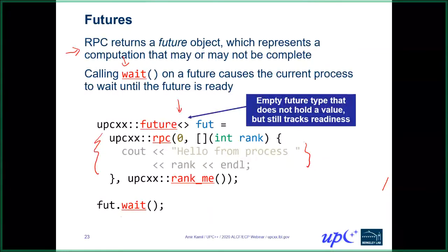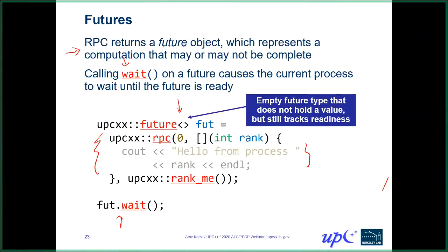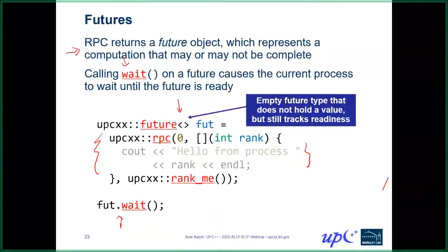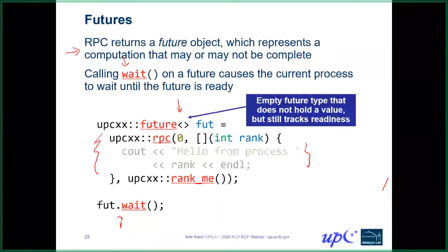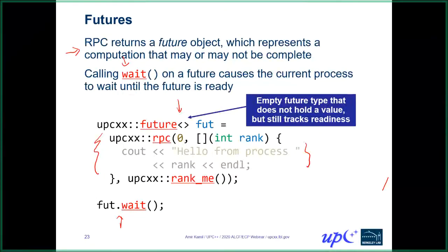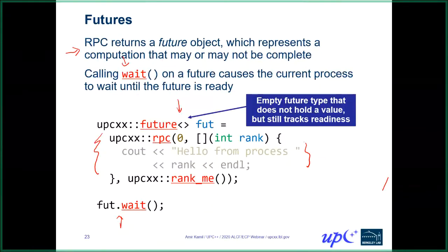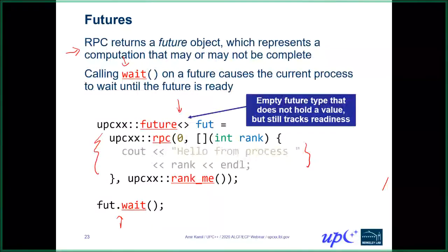On RAII for futures: there isn't any such that destructing a future would automatically wait, because a future is essentially just a handle — a reference to an asynchronous operation — and you can make copies of it. Therefore we can't rely on RAII to do the wait. As a design principle, we want communication and synchronization to be explicit and not hidden in a destructor.